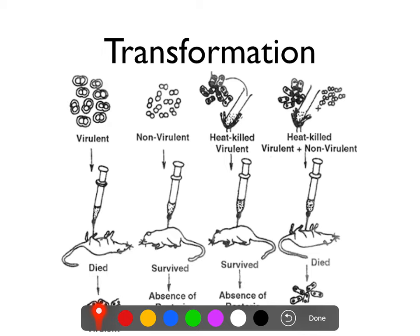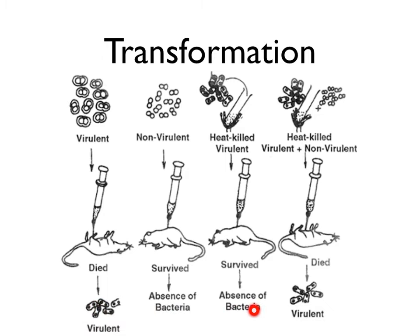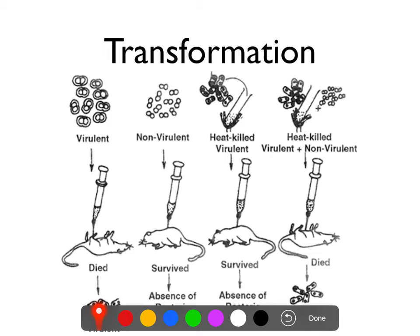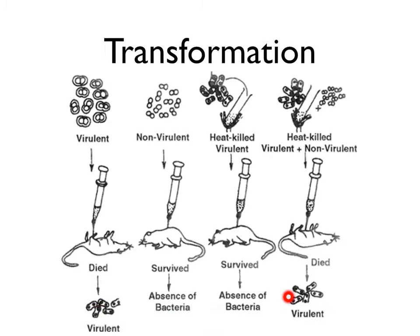So what if you take the smooth bacteria and kill them — you boil them, they're dead. If you inject mice with dead bacteria, the mice survive. The bacteria can't replicate, so if you culture the blood, you don't find any bacteria. Theoretically, if you mix dead smooth strain with live rough strain, which is also harmless, and inject the mice — guess what? The mice die. And if you culture their blood, you find live smooth strain bacteria.